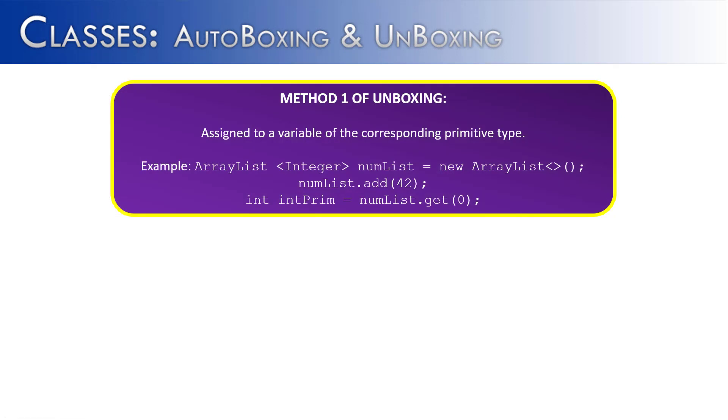So just like there are two methods of autoboxing, there are two methods of unboxing. The first one is assignment. And on the last line there is the assignment when we say int intPrim equals numList.get(0). Get(0) is an integer object. It needs to be converted and it will automatically do that and unwrap it, store 42 as a primitive inside of intPrim. So we see first method of unboxing, assignment.